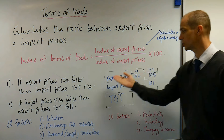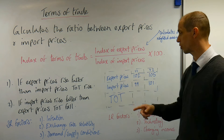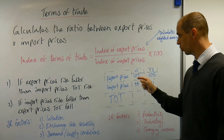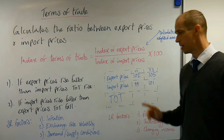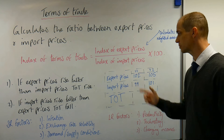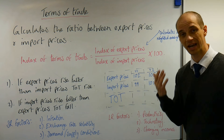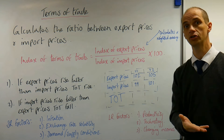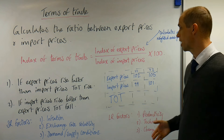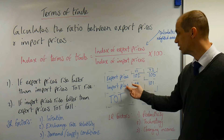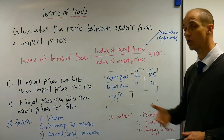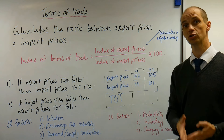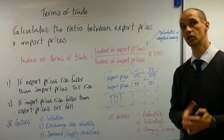Consider this scenario: in Year 1, starting from a base of 100, the export price index has risen from 100 to 102. Meanwhile, the import price index has become slightly cheaper overall, falling to 99.